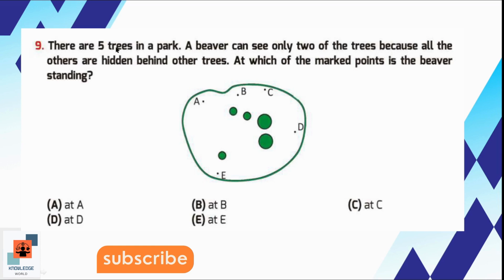Question number 9, there are 5 trees in a park. A beaver can see only 2 of the trees because all the others are hidden behind other trees. At which of the marked points is the beaver standing? If he is standing at point D, then these 2 small trees are hidden behind the 1st big tree and this 3rd small tree is hidden behind the 2nd big tree. So he is standing at point D.